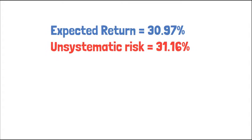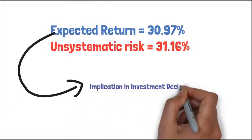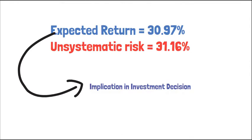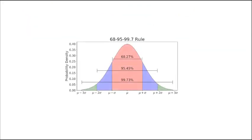Finally and most importantly, we are going to learn how to interpret this unsystematic risk measure and how to possibly use this number in our investment decision. For the interpretation, we need to have some understanding about 68, 95, 99.7 rule using normal distribution. This is also called probability density function.